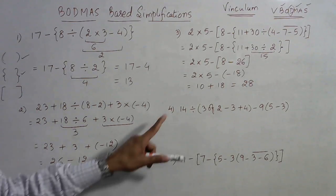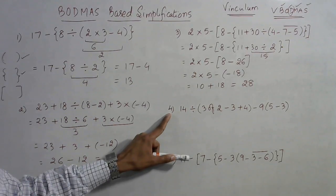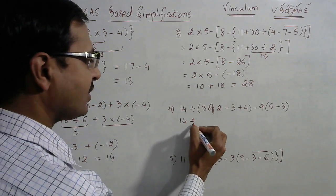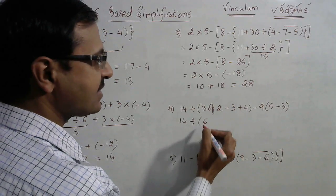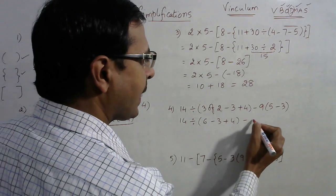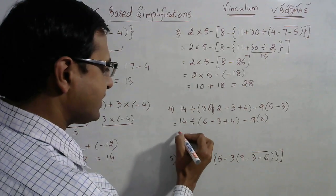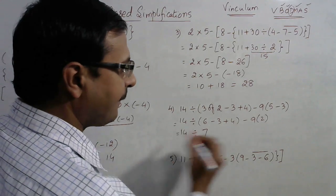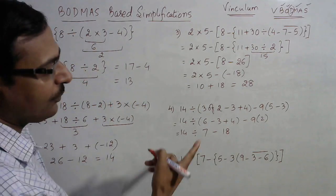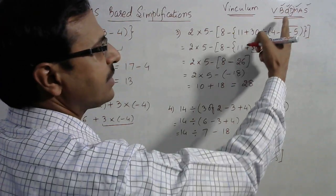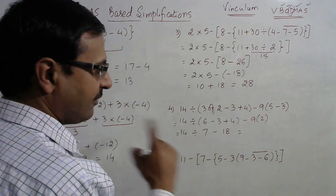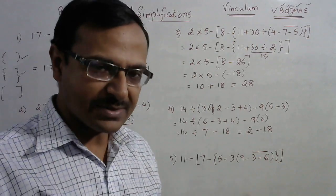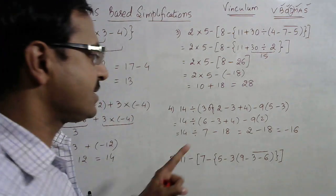Now let us get on with the fourth question. Here we have two parenthesis brackets and an 'OF' operation. O stands for OF, so let us handle that first: 3 of 2 is 6 (3 into 2). Then simplify: 5 minus 3 is 2. Removing the bracket: 6 plus 4 is 10, 10 minus 3 is 7, and 9 times 2 is 18. Now we have division and subtraction — division comes first: 14 divided by 7 is 2, minus 18. We are subtracting a larger number from a smaller, so the answer is negative: minus 16.